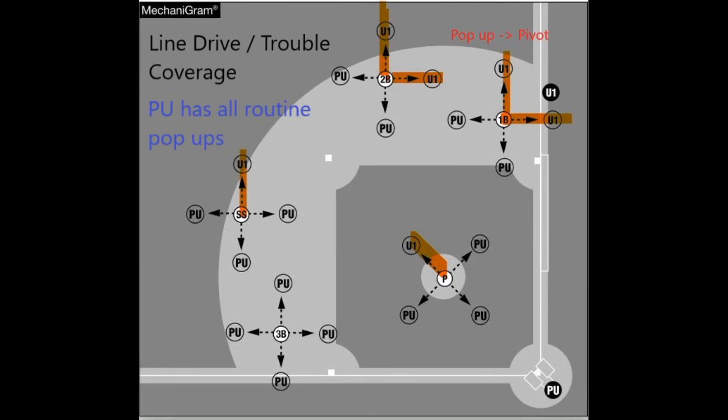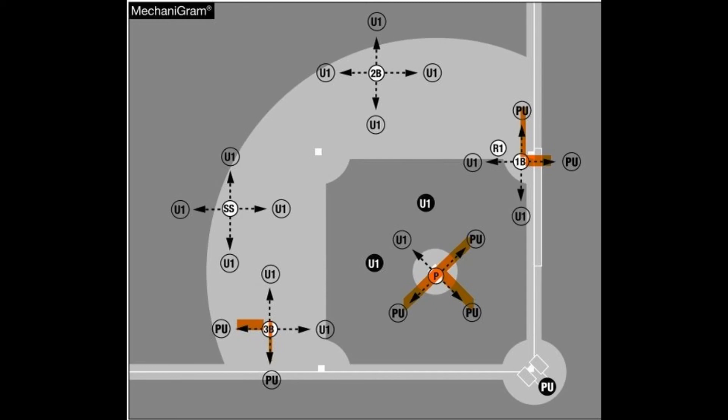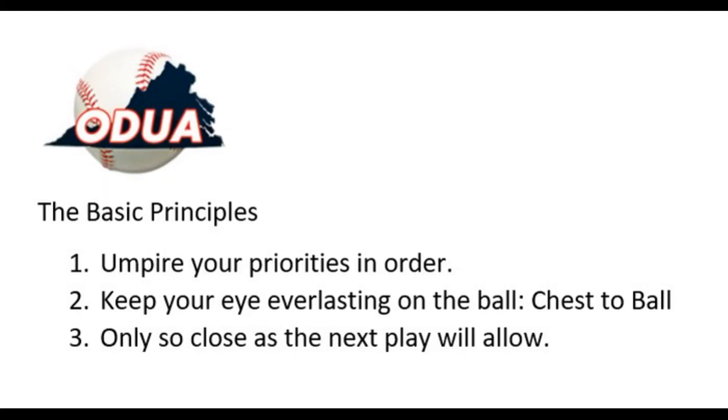All other line drive responsibility belongs to the plate umpire. When there are runners on base, the base umpire in the middle of the infield is responsible for all pop-ups and line drives, except those hit to the pitcher going to his right or left or straight in, the third baseman going toward the line, the first baseman going toward the line, the first baseman going backward, and the third baseman going backward. Thank you for watching this video on catch-no-catch coverage on the infield in a two-umpire system.